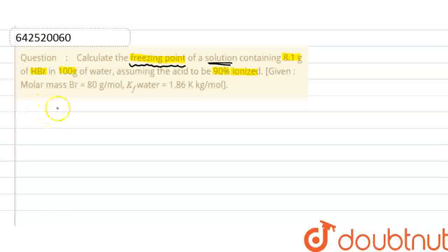Now, what is the formula for depression in freezing point? The formula is ΔTf = Kf × molality × Van't Hoff factor.